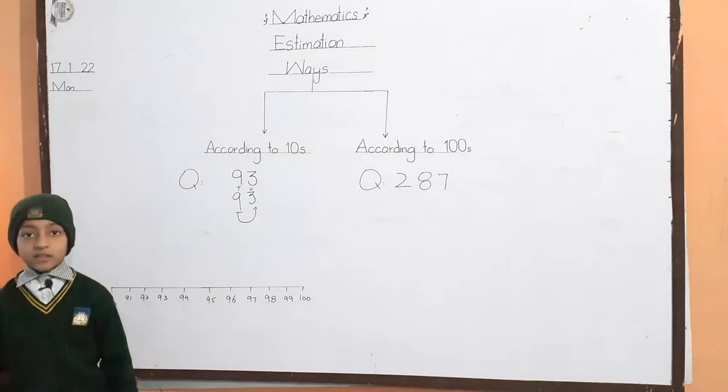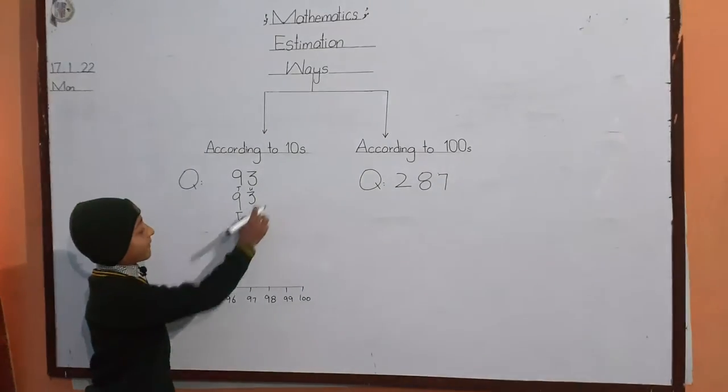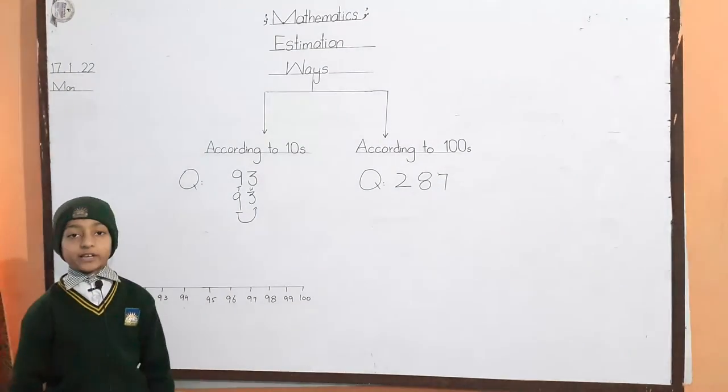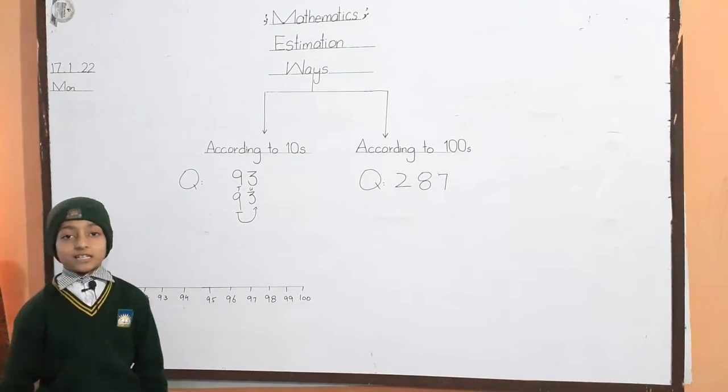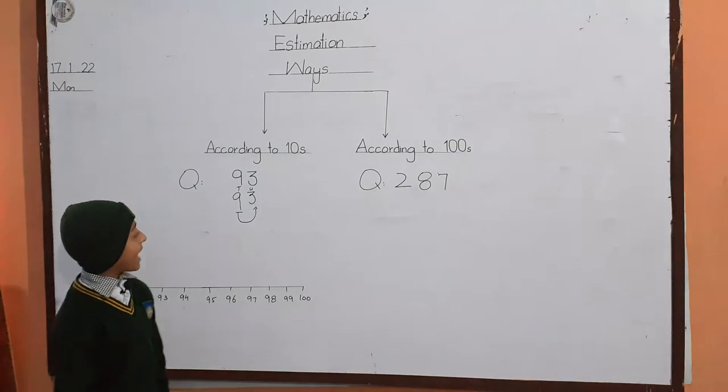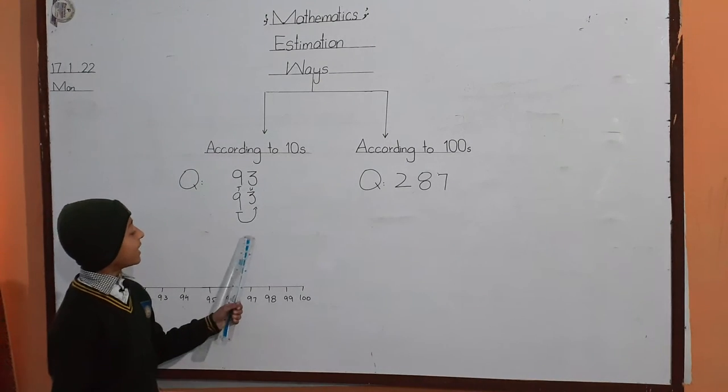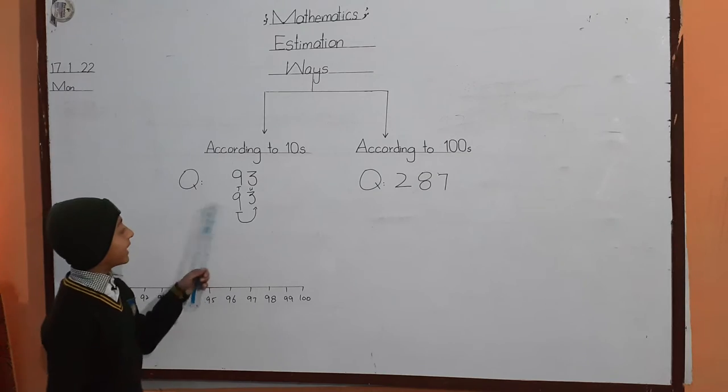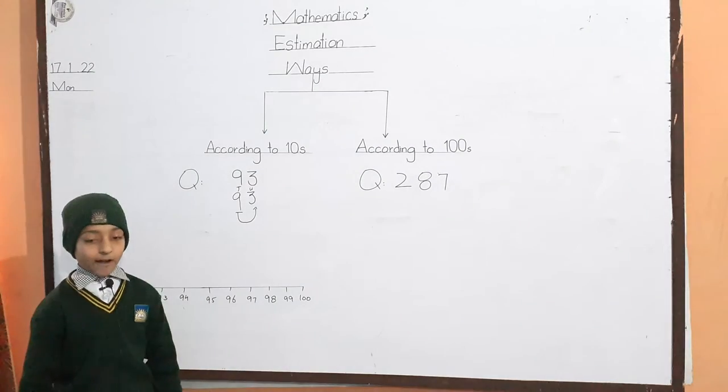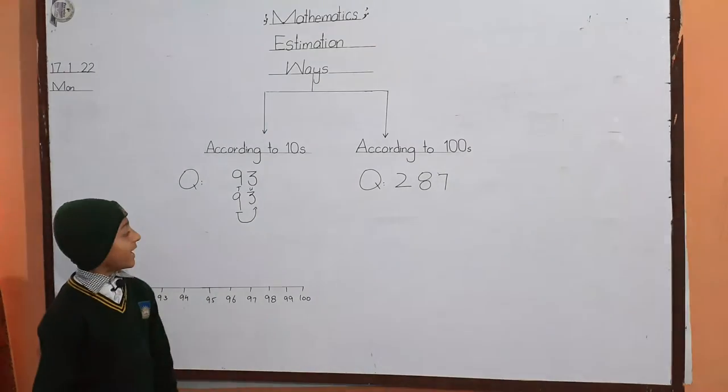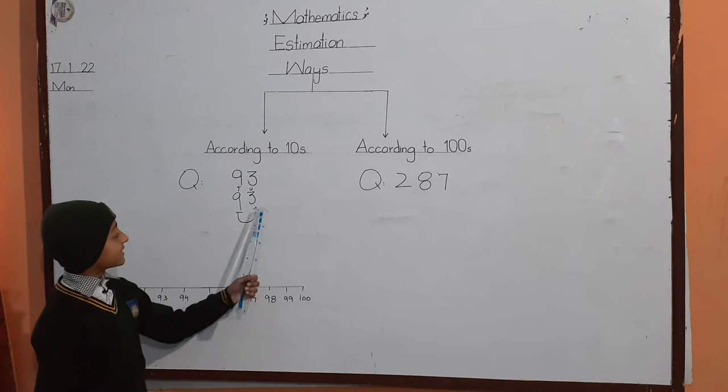Fifth step: arrow ke oopar wala digit dekhna. Woh greater than five mein hai, ya less than five. Agar woh greater than five mein hai, toh us mein hum ek add kar denge. Agar woh less than five mein hai, toh us mein add nahi karayenge. Three less than five mein hai.